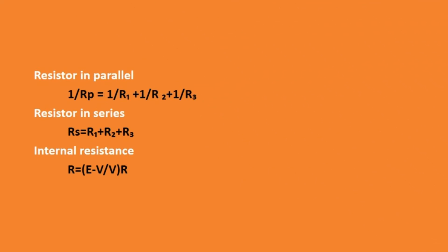Next is resistors in parallel. When we connect resistors in parallel, we use the formula 1 by Rp equal to 1 by R1 plus 1 by R2 plus 1 by R3. When resistors are in series, we use Rs equal to R1 plus R2 plus R3. Next is internal resistance: R equal to (E minus V) by V, multiplied by R.